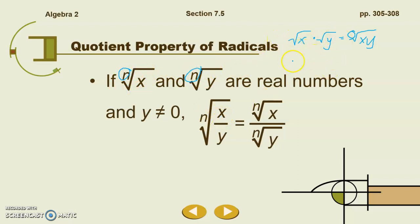If we have the root of x times y, we can separate those into two separate roots: square root of x over square root of y. That was the product property — product meaning multiplying. The quotient property has to do with division. So if we have a rational number or a fraction inside a radicand, we can split that into two separate radicals with a radical over our numerator and a radical over our denominator.